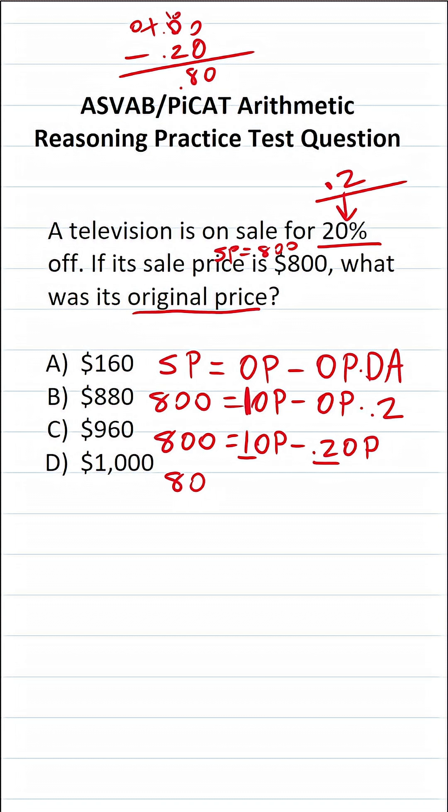So this becomes 800 equals, what is 1 minus 0.2? It's 0.8 of the original price.